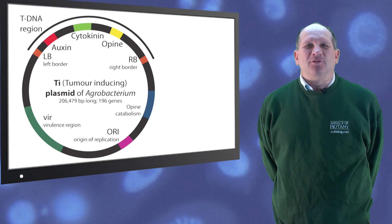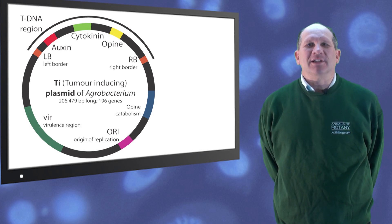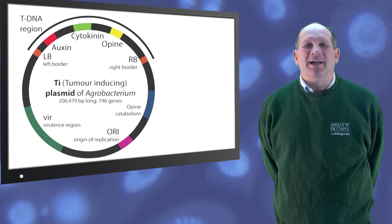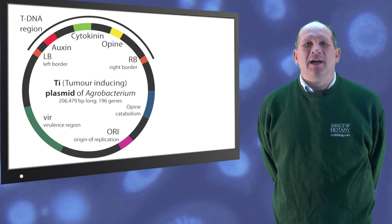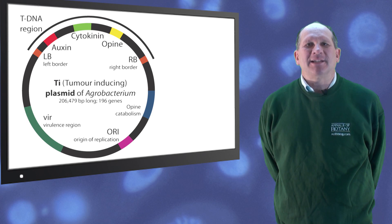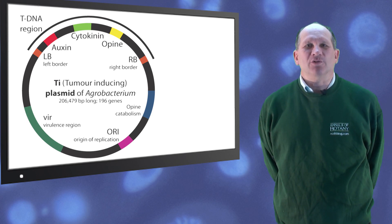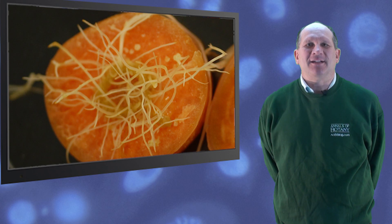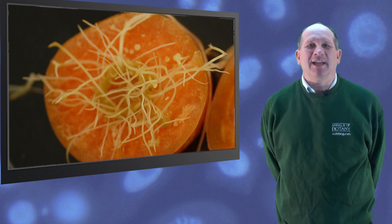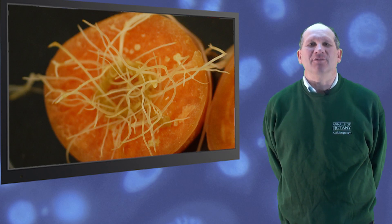A different group of genes — both for the hormones and for controlling plant development — are present in Agrobacterium rhizogenes, and these led to the production of differentiated roots from the carrot cells at the site of wounding, or in our case the cutting of the root tissue.